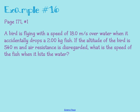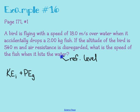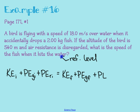Step two is to choose a reference level — in this case the reference level is going to be the water. I'm indicating what level I chose as I do the problem. Step three is to figure out initial and final points. I know some information about the fish when it was dropped from the bird — that's my initial point. My final point is going to be when it hits the water, just barely before it makes contact. Now I can write out a conservation of energy equation: KE initial plus PEG initial plus PEE initial equals KE final plus PEG final plus PEE final.